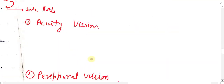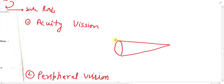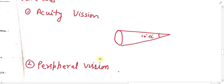We are going to discuss two types of vision in diagram form. The first is acuity vision — a cone of depression up to 10 to 12 degrees is known as acuity vision, and on the basis of this we will place our traffic signs and signals. After this, there is another vision known as peripheral vision.